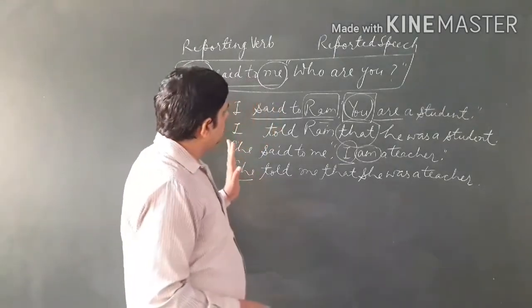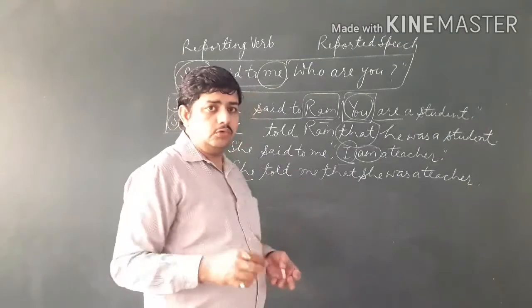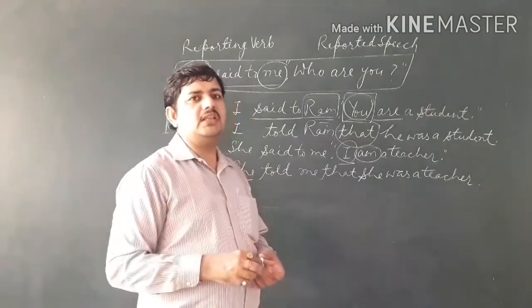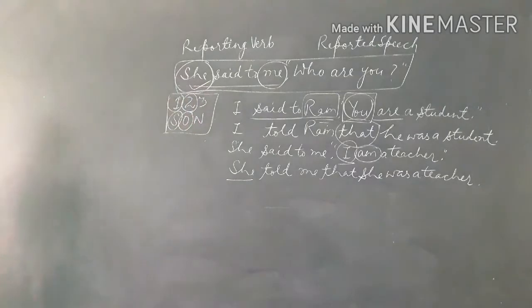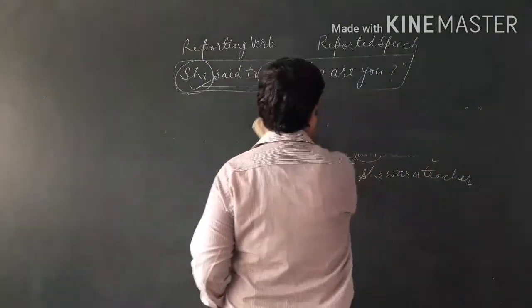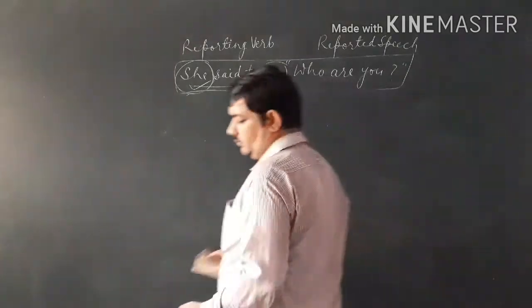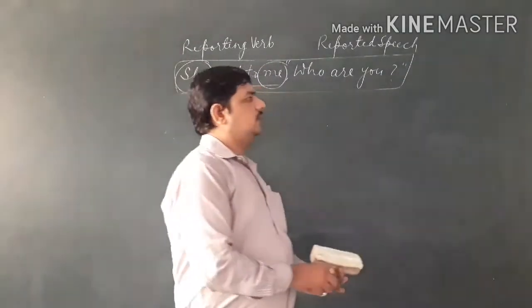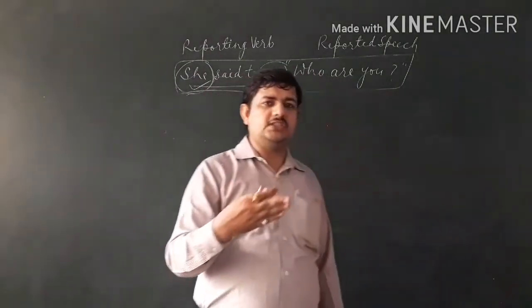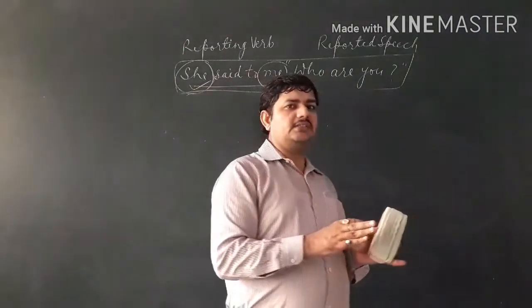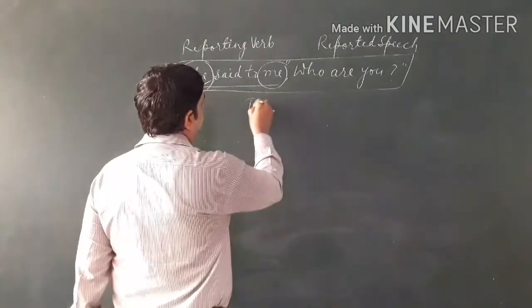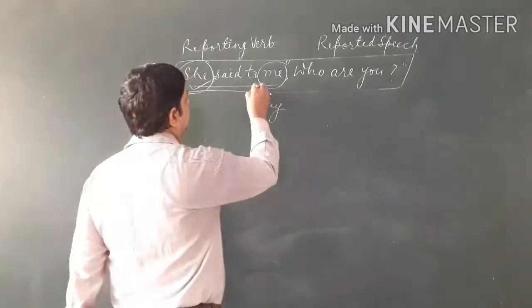So now, apart from pronoun changes, there are also other important word changes. There are about 10 specific words that change according to rule when we convert direct to indirect speech — which words change into which other words will be told later. First, regarding time expressions: when we change 'today' in direct speech, it becomes something different in indirect speech.